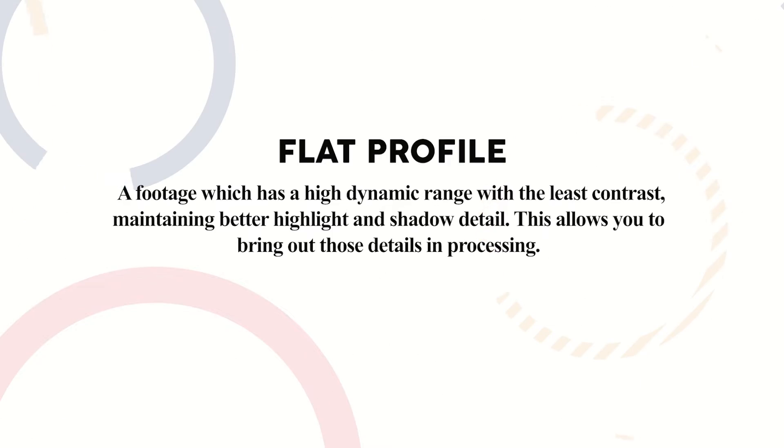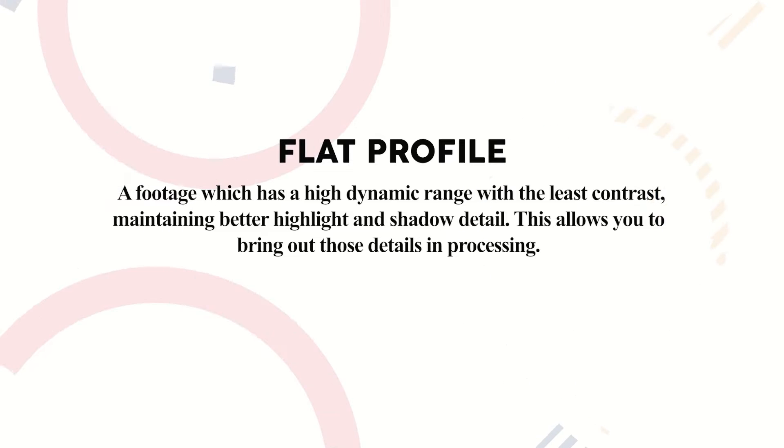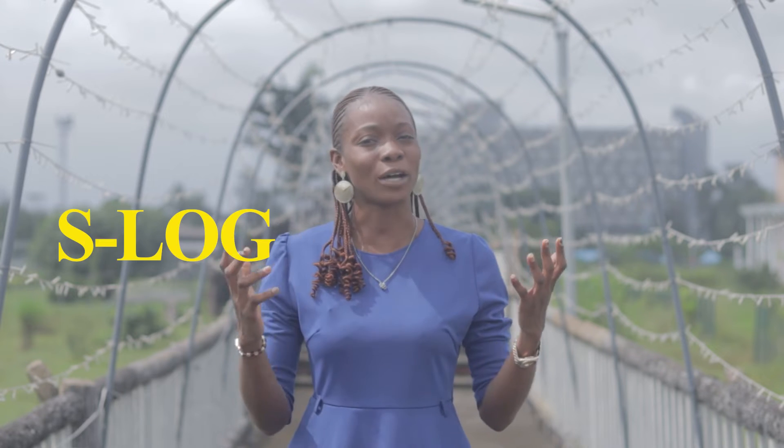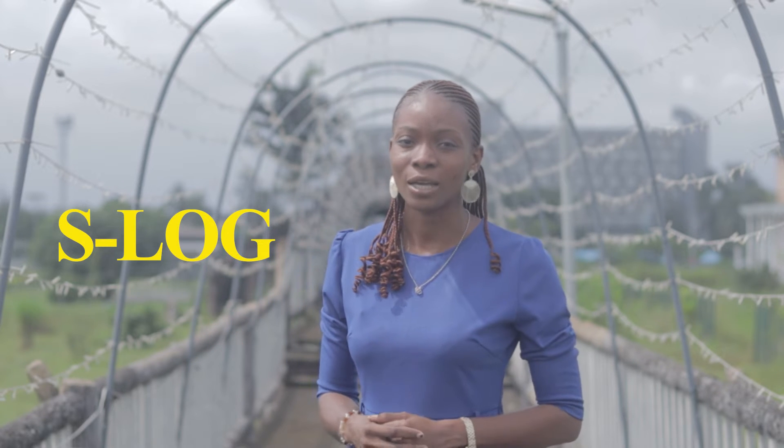In your color grading you have to shoot in a flat profile. A flat profile is footage that has a high dynamic range where you interact between the exposures, highlights, and shadows without losing details. It makes your video more cinematic because it gives you a wide range of options. This is how this video looks straight out of camera — shot with an M15 — and this is how it looks color corrected, and then color graded. Let's jump straight into it.